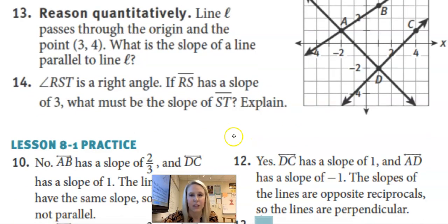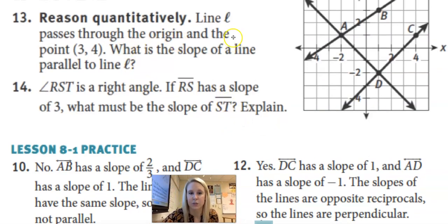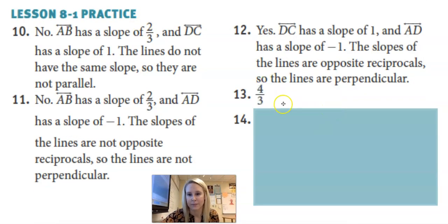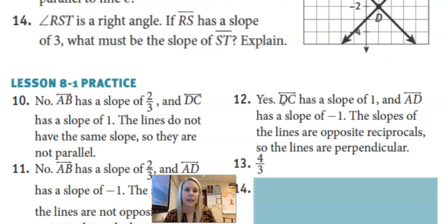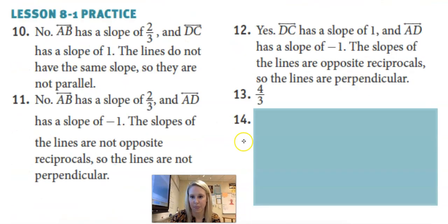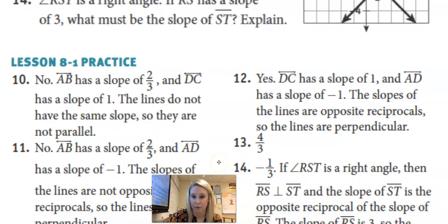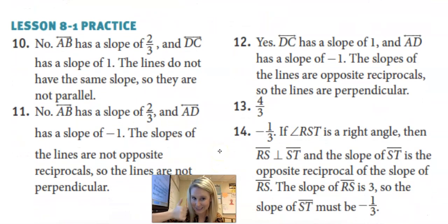Number 13, line L passes through the origin, the center, and the point 3, 4. What is the slope of a line parallel to that? So you first had to find the slope going through the origin, 0, 0, and then 3, 4. So if you wanted to use your graph and plot your two points that way, or you can use your slope formula, but the answer is four-thirds. Last but not least, RST is a right angle. So if RS has a slope of 3, what must the slope of ST be? So if it's a right angle, I know they are perpendicular, so I was looking for an opposite reciprocal of 3, meaning negative one-third. Alright, guys. So that is it on parallel and perpendicular lines. You can now head to practice. Thanks for watching, and let me know if you have any questions.